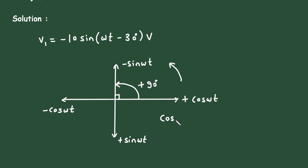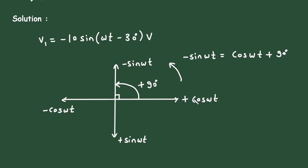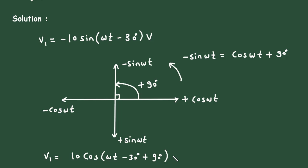The formula is: minus sin(ωt) = cos(ωt + 90°). Substituting into V1: in place of minus-sin we substitute cos(ωt + 90°). So V1 = 10 cos(ωt − 30° + 90°) volts, and since it is a voltage its unit will be volts.